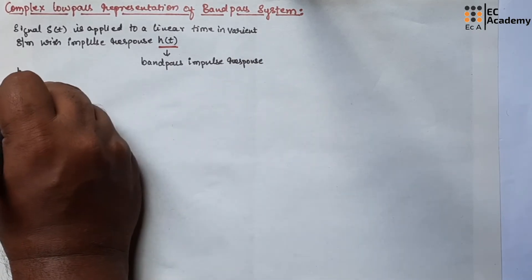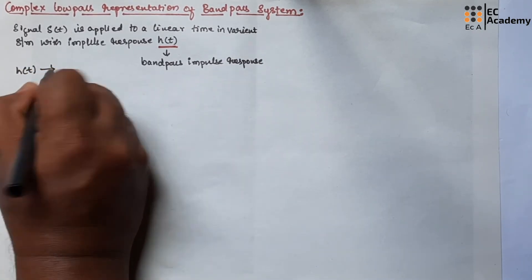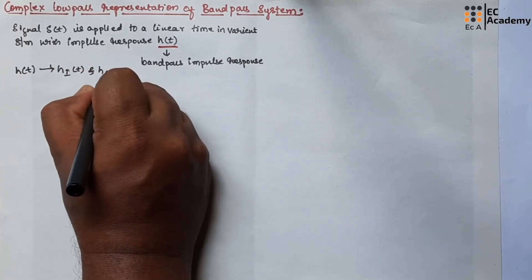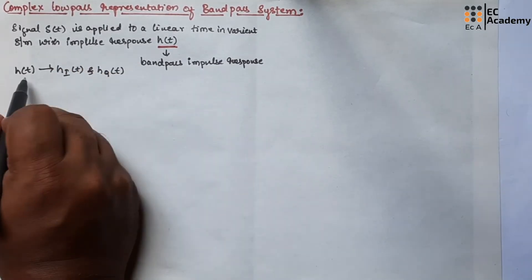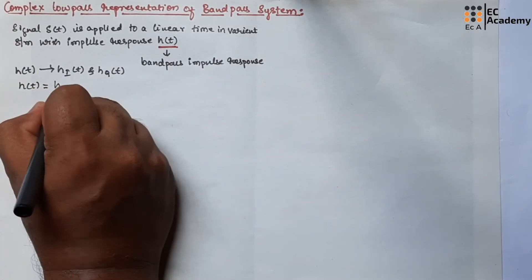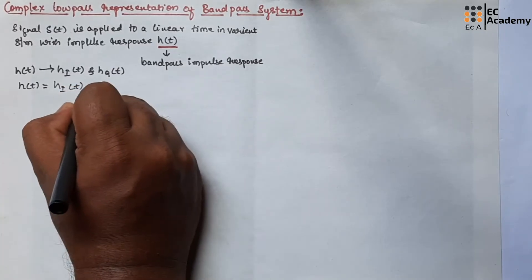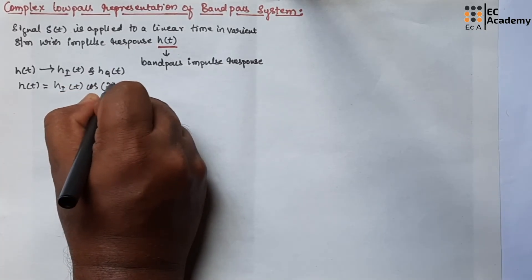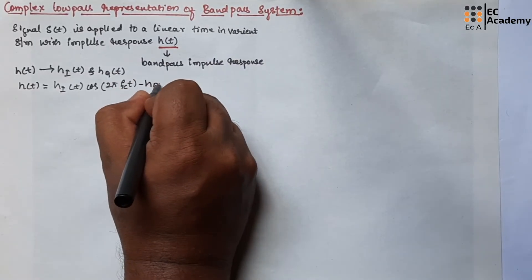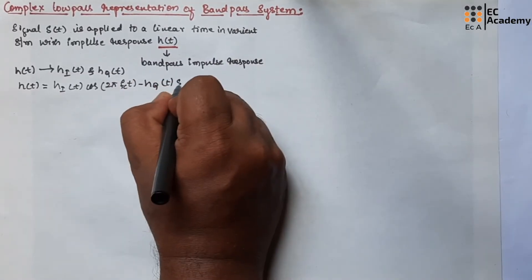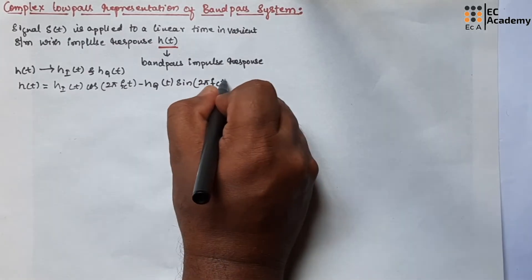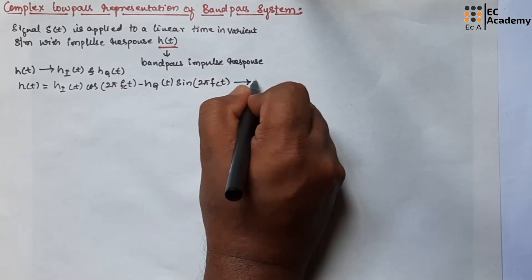So let us represent H of t in terms of HI of t and HQ of t. We can represent H of t as: H(t) = HI(t) cos(2π fc t) − HQ(t) sin(2π fc t). Let us call this equation number 1.